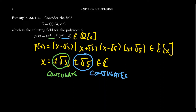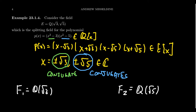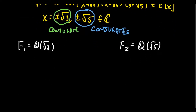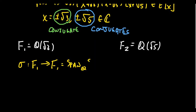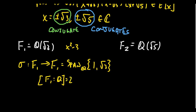To make notation easier, we introduce F1 = Q(√3) and F2 = Q(√5). Looking at F1, since the minimal polynomial of √3 is x² - 3, F1 is a degree 2 field extension of Q. As a Q-vector space, F1 has basis {1, √3}, so it is a quadratic extension.